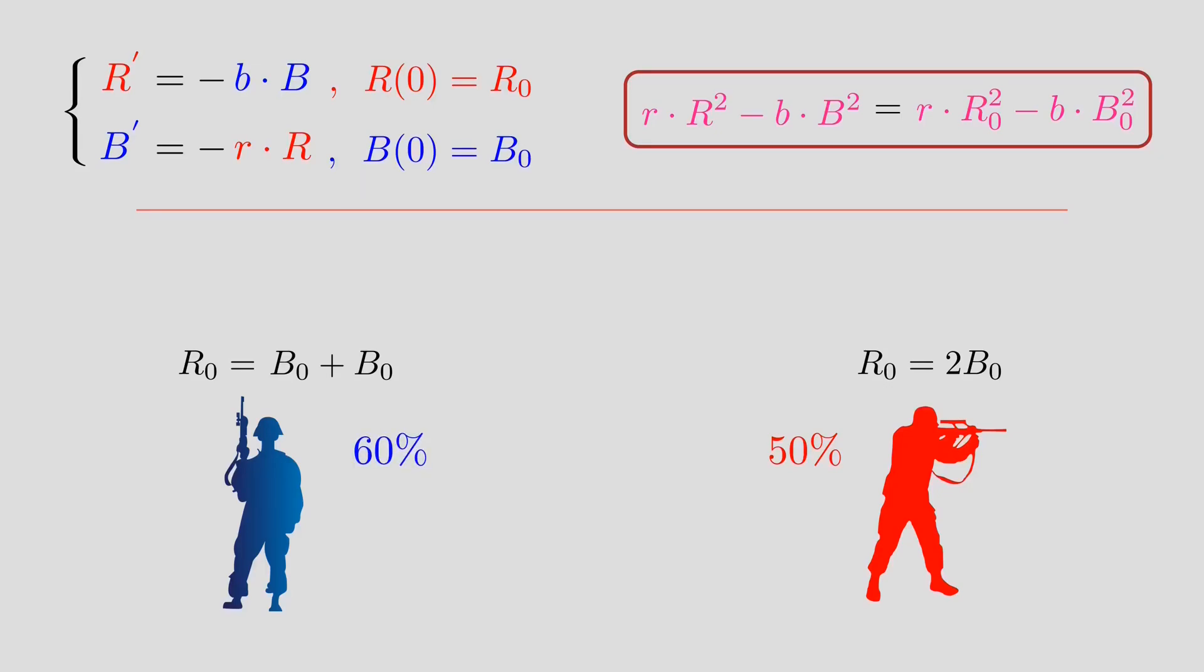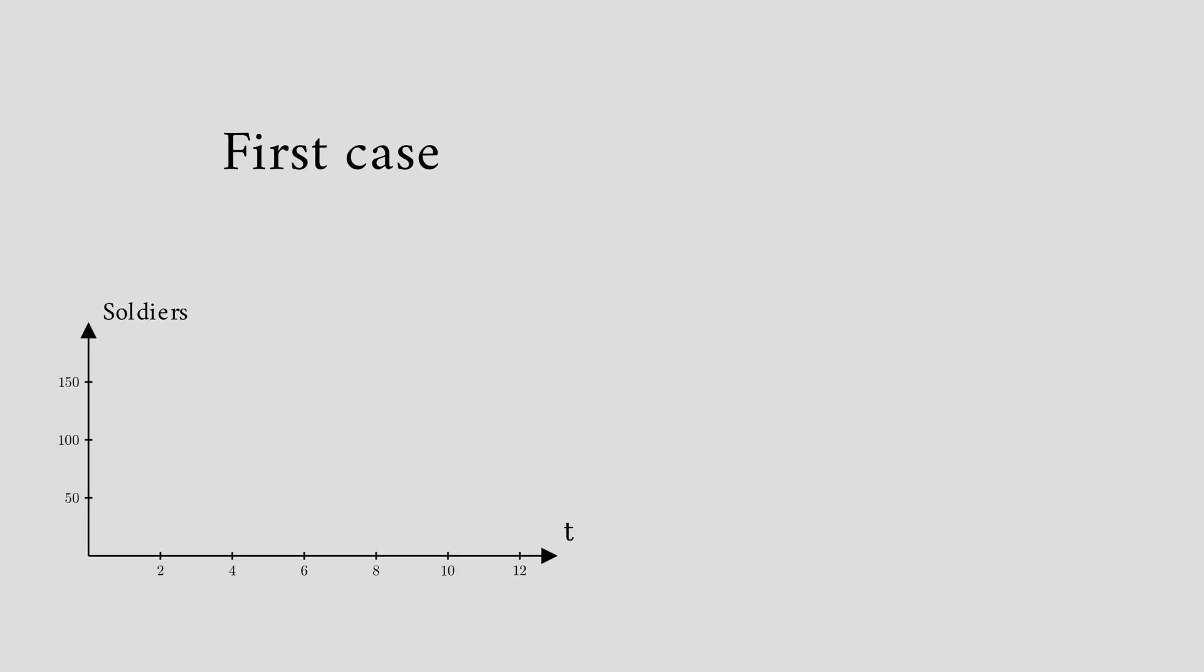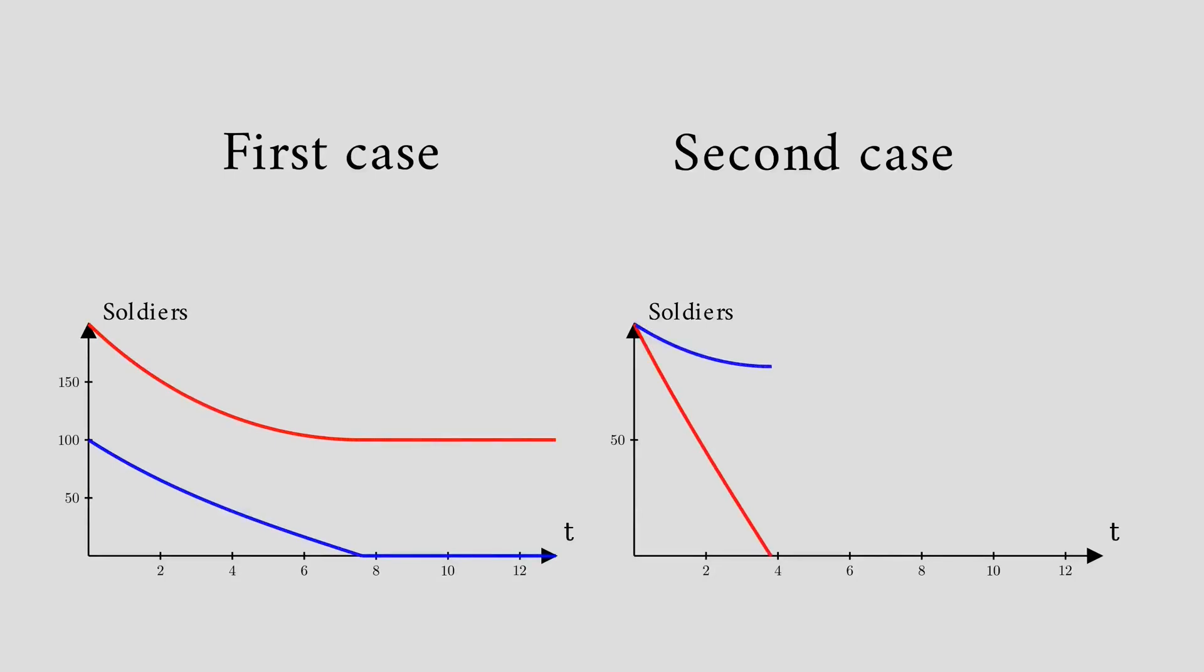We can confirm this using a Python simulation, even though we don't have to. We see that in the first case, the red army starts with double the number of soldiers. And B reaches zero first. So the reds win. In the second case, there are two phases. The first phase blue wins because R reaches zero first. And the second battle begins. And it also ends with the reds losing.